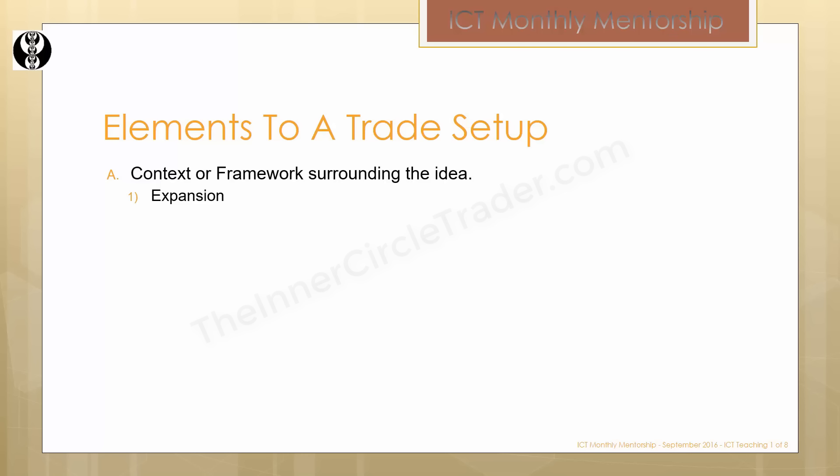The first condition is expansion. We're going to talk about expansion and what we look for in that condition. Then we'll talk about retracements and what tool or concept we use for retracements. Reversal, and lastly consolidation. Each one of these four gives a specific framework and context to the marketplace you're going to be trading in. They can only be one of these four conditions — either the market's going to be expanding, trending, a retracement or pullback, an altogether reversal, or when the market's doing nothing, it's consolidating.